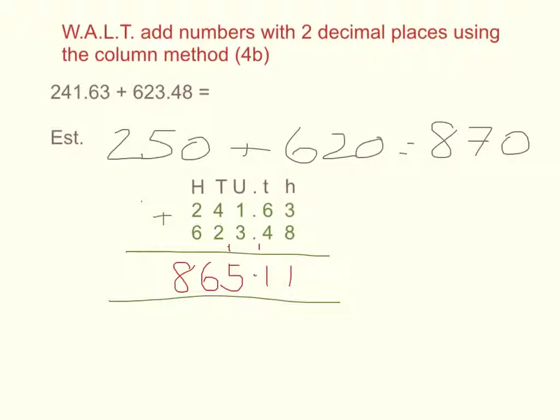I look at my answer of 865.11 and see if it makes sense in relation to my estimate, which is 870. They are very close, so I can now record my answer: 241.63 add 623.48 is equal to 865.11.